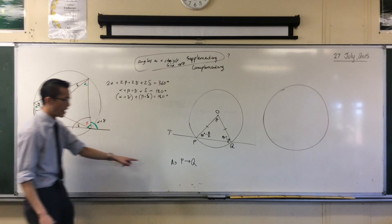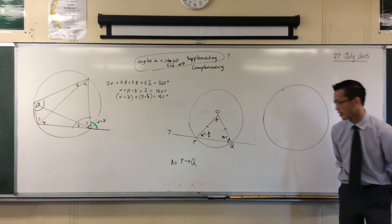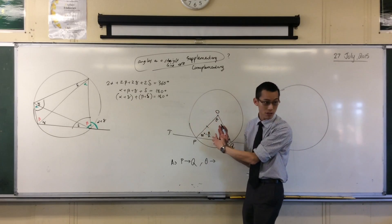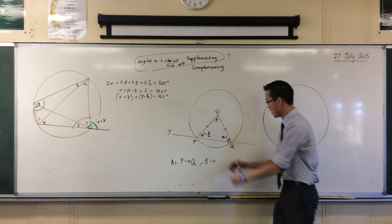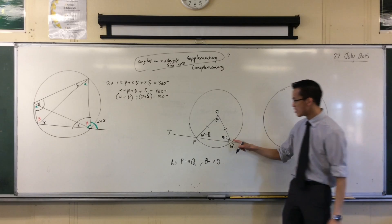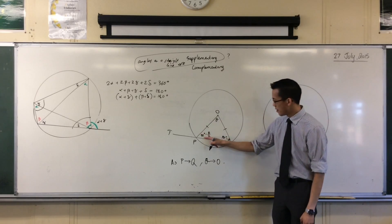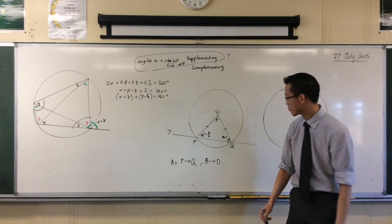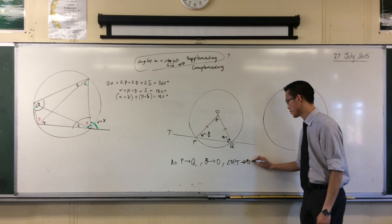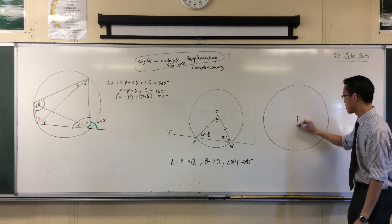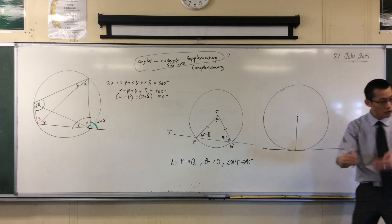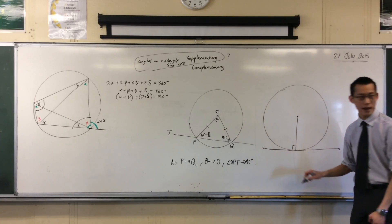So now therefore, as P approaches Q, what happens to that angle theta subtended at the center? Theta is going to approach a value as well. It's going to approach zero. It's going to get narrower and narrower and narrower. Can you see it in your mind's eye sort of coming together? So as theta approaches zero, what's going to happen to these guys? 90 minus theta on 2 will approach 90. So therefore, I can say angle OPT approaches 90 degrees. You see that? So therefore, this is what I have. This is the special case where the two points P and Q coincide. They're right there, and so they're both equal to 90 degrees.